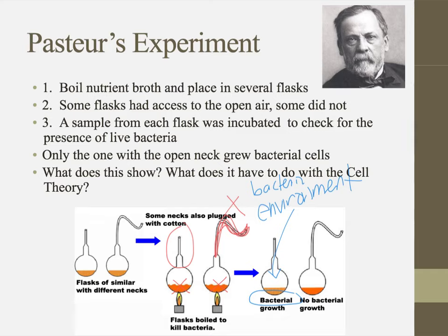This showed it must have been something in the environment entering the open broth and causing bacterial growth. He proposed that bacteria in the environment made their way into the open flask, then grew and reproduced. Therefore, he showed that new cells can only come from pre-existing cells. This is also where we get the term pasteurized milk — killing off the bacteria present in milk.